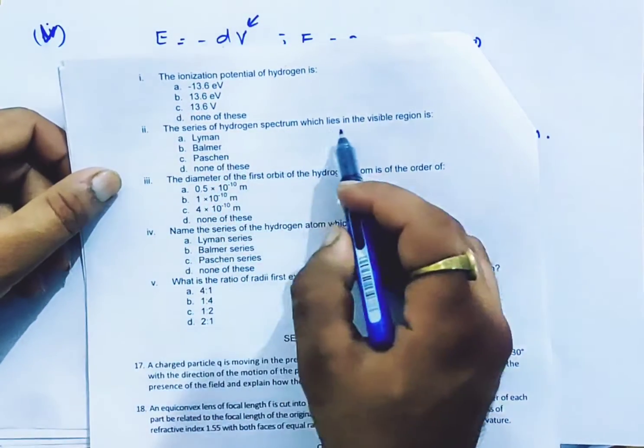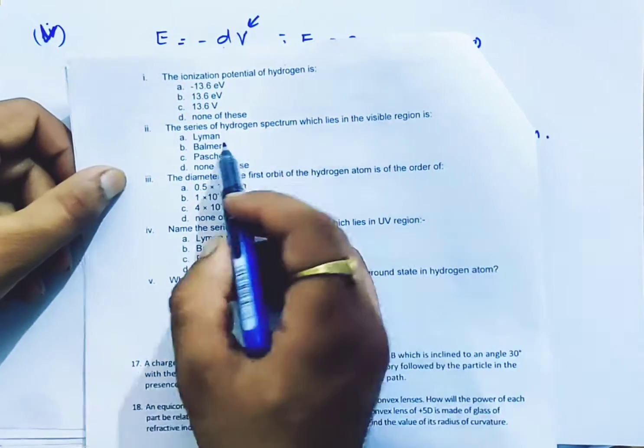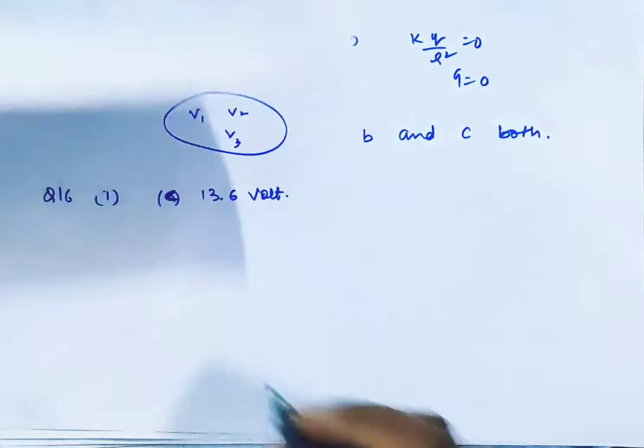Now, the series of hydrogen spectrum which lies in the visible region is Lyman, Balmer, Paschen, and none of these. This is Balmer.